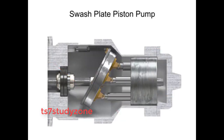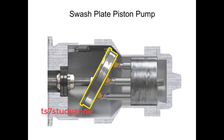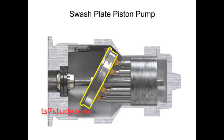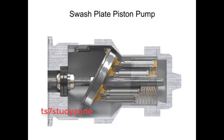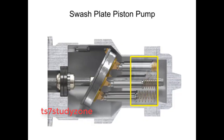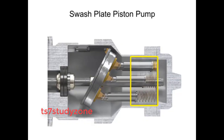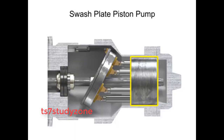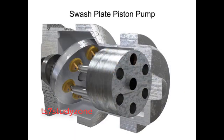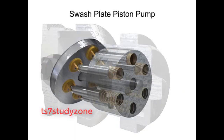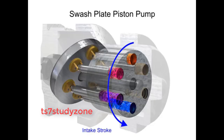As the shaft rotates, the pistons move against the swashplate, causing them to reciprocate within the piston block. The pistons create a vacuum that forces fluid in during half a revolution and expels fluid during the other half.